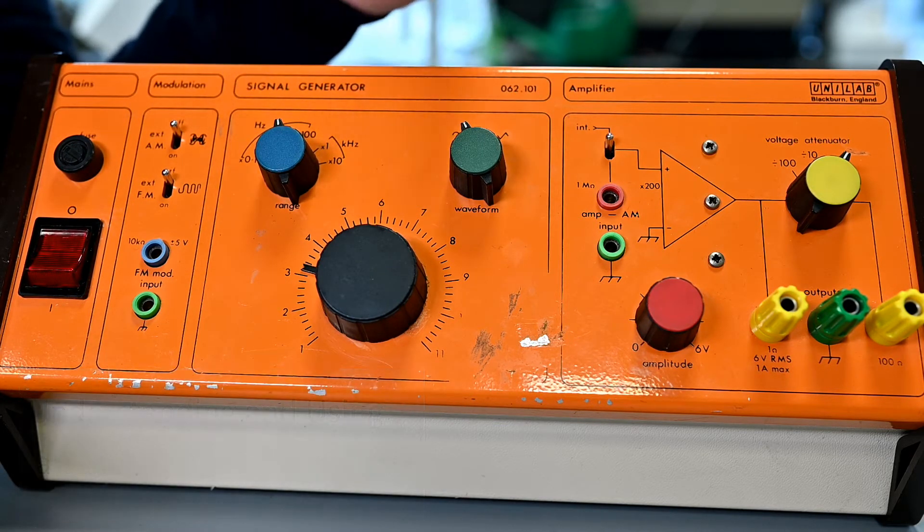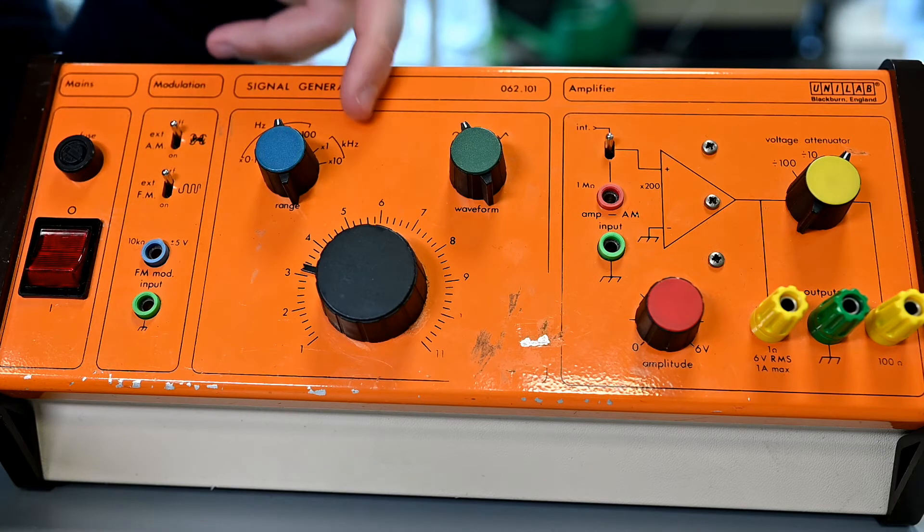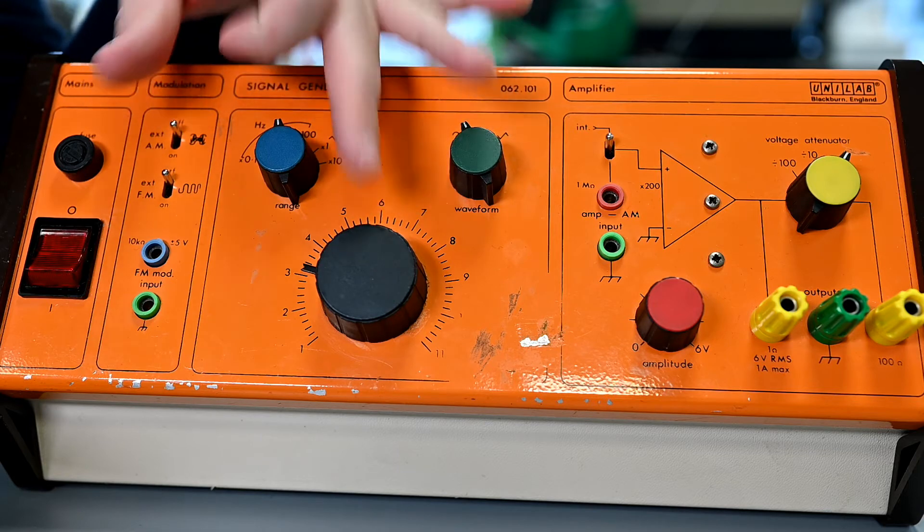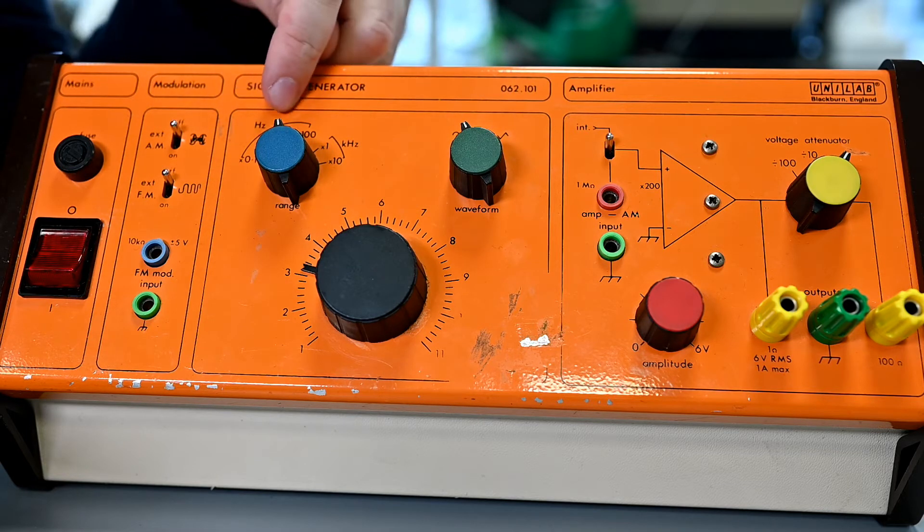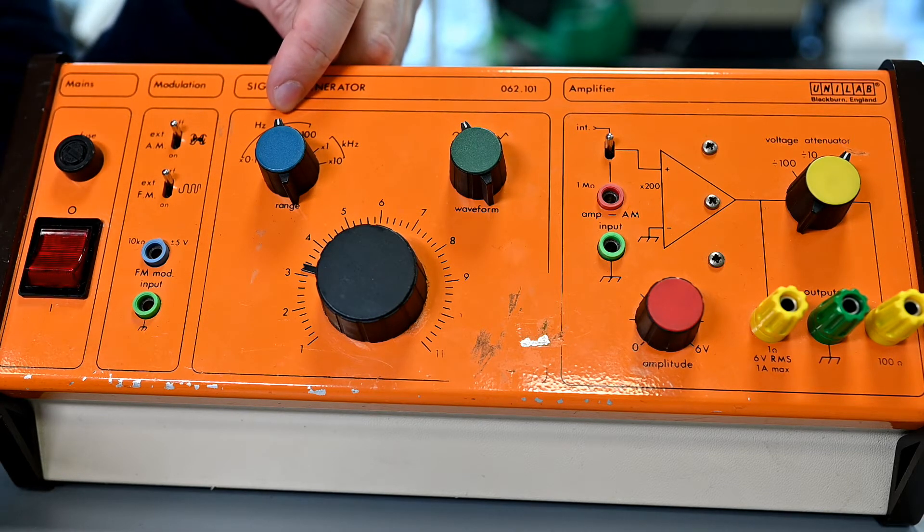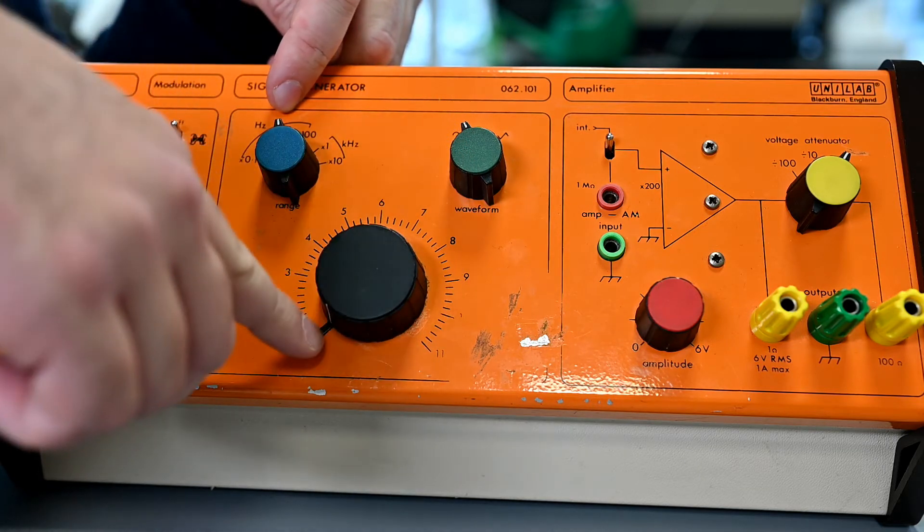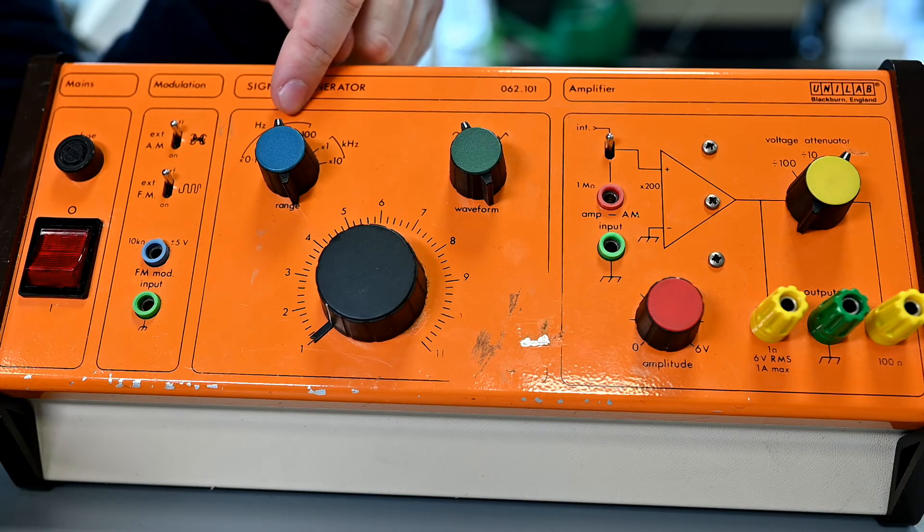We first have a scale dial. This tells us what the zero and the ten on the main dial are up to. At the moment it's set to times 10 hertz, and that means when I set the main dial down there so it's pointing at one, it's one times 10 hertz. That would be 10 times per second the signal output is changing.